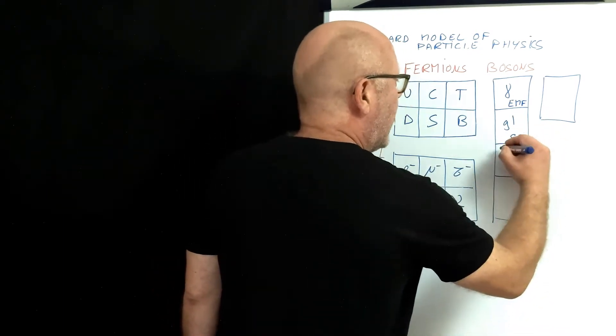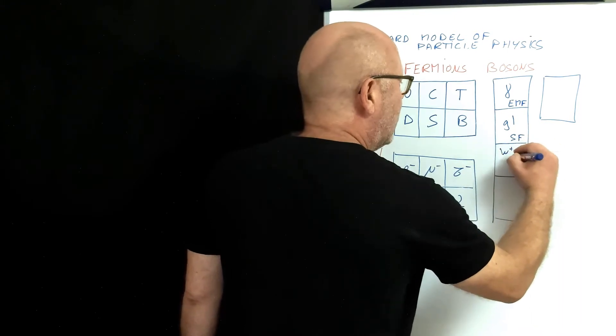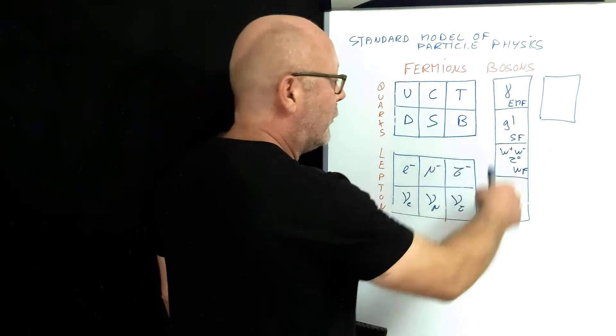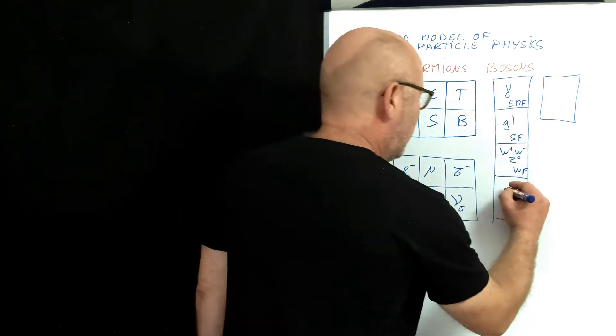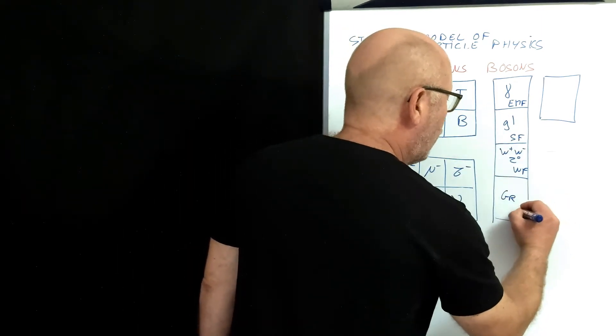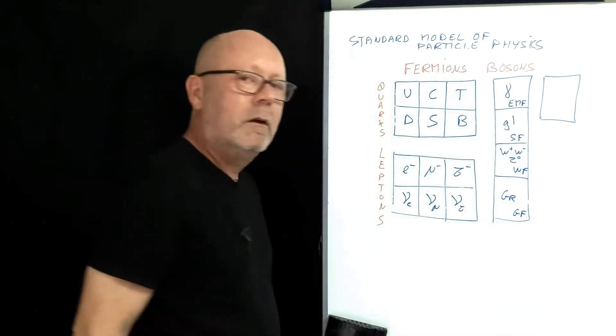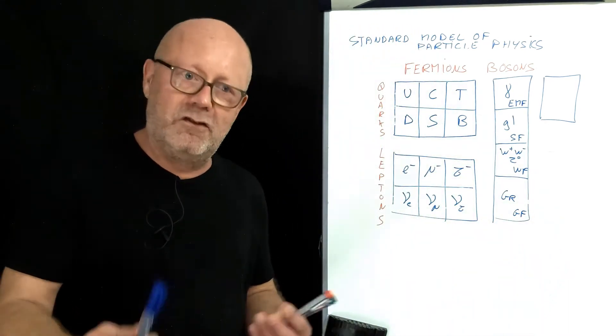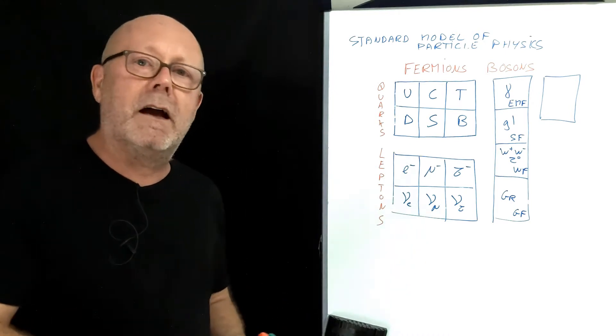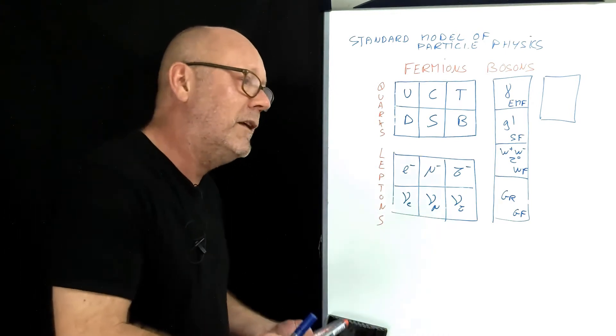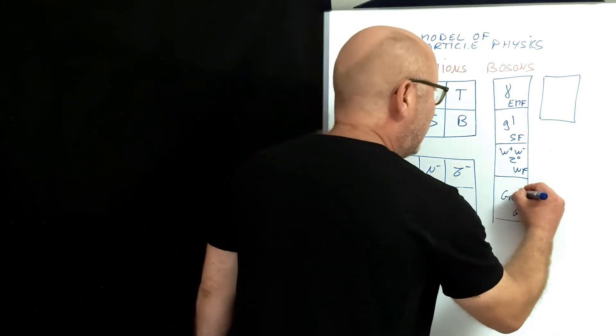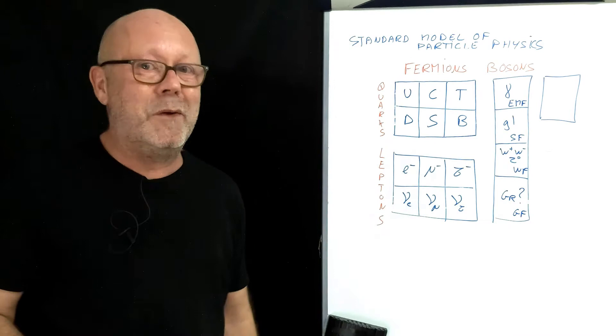The weak force is mediated by the W+, W-, and Z0 bosons. The last box of the boson family is for the graviton. It would mediate the gravitational force. But the idea of a graviton conflicts with general relativity. There's a problem here between Einstein's view of space-time and the view of space-time of quantum mechanics. So does it really exist, especially that we have never detected it? We don't know.